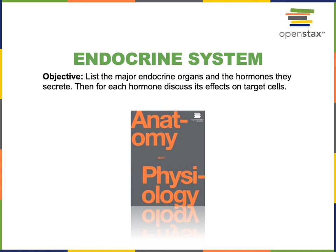This video will cover the first portion of the following objective from the endocrine system: list the major endocrine organs and the hormones they secrete, then for each hormone, discuss its effects on target cells.